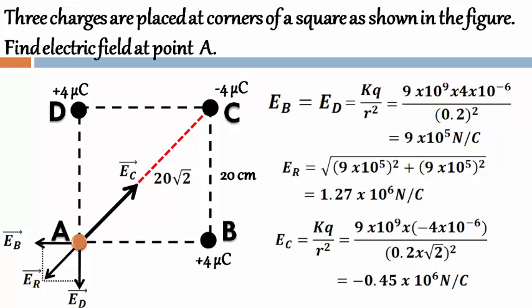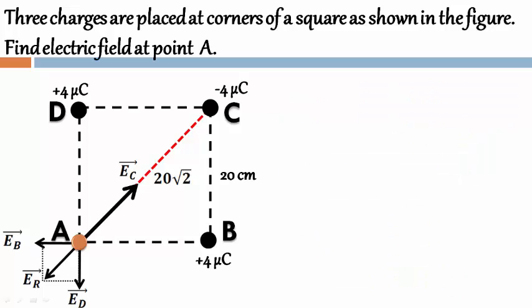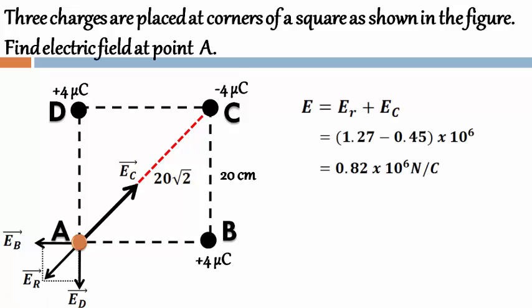So we have E_C, we have E_R which are acting in opposite direction. Therefore, our resultant electric field will be given by E equals to E_R plus E_C. Substituting the values, E_C is negative so we take the difference. The electric field at point A will be equals to 0.82×10^6 Newton per coulomb and its direction will be along E_R.